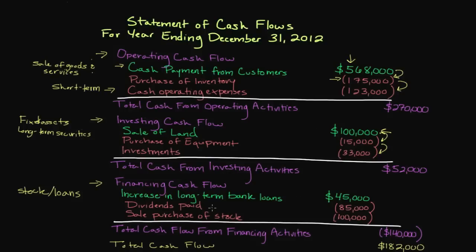Next we look at paying a dividend — a quarterly payment paid to investors typically on a per share basis as a way of rewarding them for their investment. Dividends aren't guaranteed, but typically once a company begins paying them they are very reluctant to stop, as the market views stopping dividends unfavorably and the stock value will adjust accordingly. We paid $85,000 here toward dividends — cash leaving the organization, reflected in parentheses as an outflow.